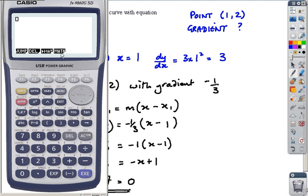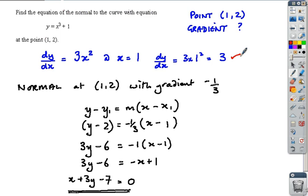In math mode, press F4 for the math menu. Choose d/dx for differential gradient. Input the function x³ + 1 and specify x = 1. It will confirm the gradient is 3.